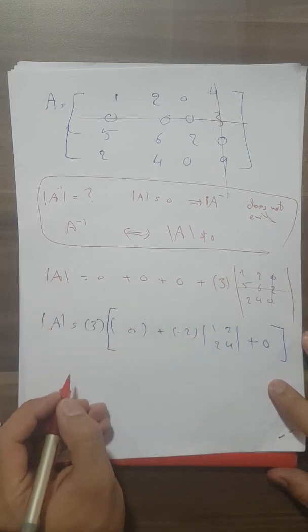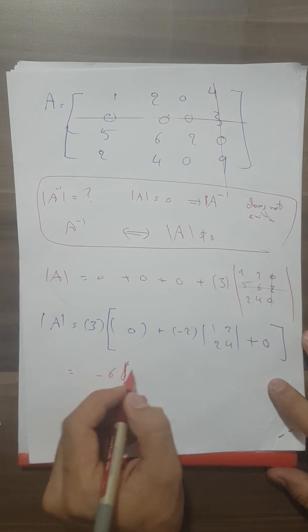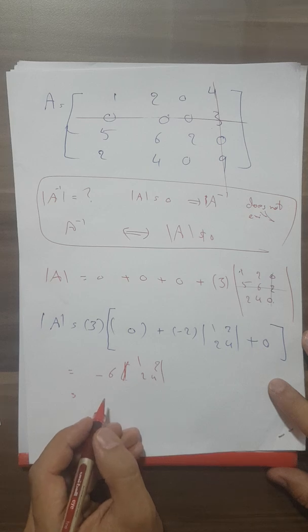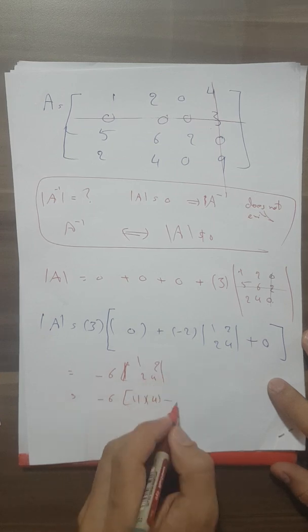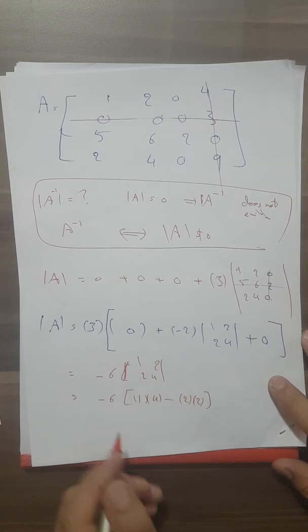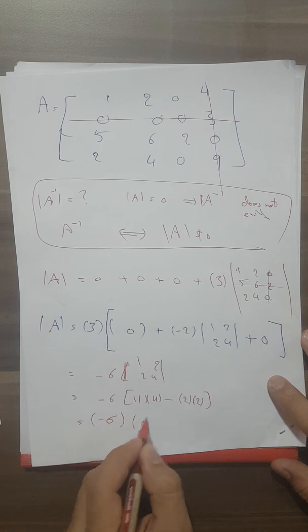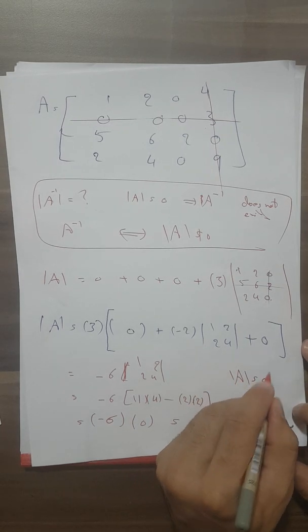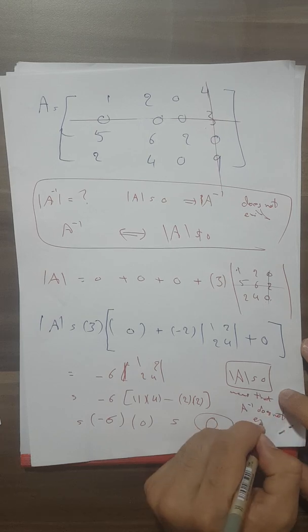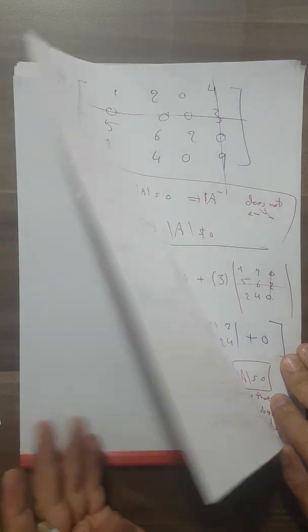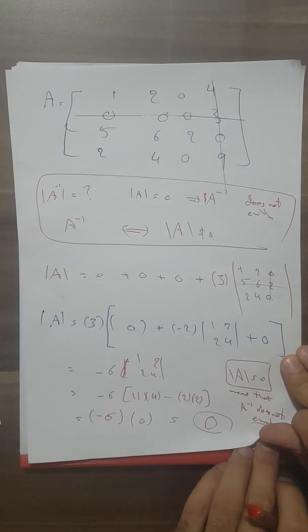We multiply negative 6 by the determinant of the 2×2 matrix [1, 2; 2, 4]. That gives negative 6 times (1×4 − 2×2) = negative 6 times (4 − 4) = negative 6 times 0 = 0. So the determinant of A equals zero, which means A inverse does not exist — we cannot find the inverse for this square matrix because A inverse depends on the determinant.